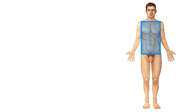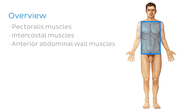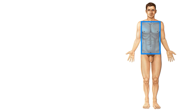In today's tutorial, we're going to be talking through four major groups of muscles found within the trunk: firstly the pectoralis muscles, followed by the intercostal muscles, followed by the anterior abdominal wall muscles, and finally the posterior trunk muscles. And of course, we'll summarize them all at the end.